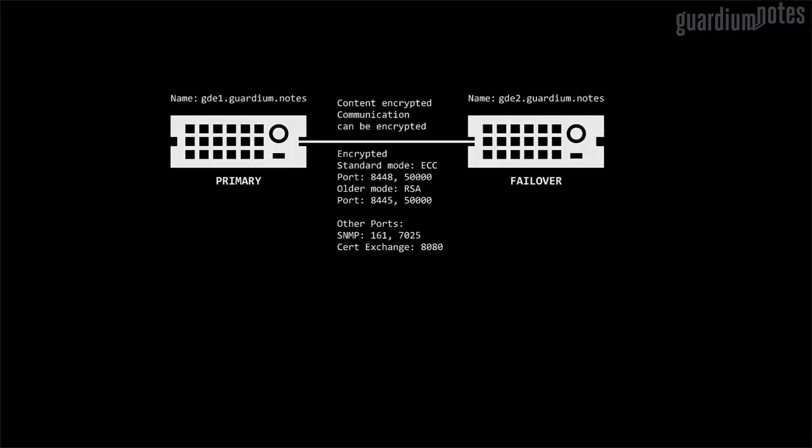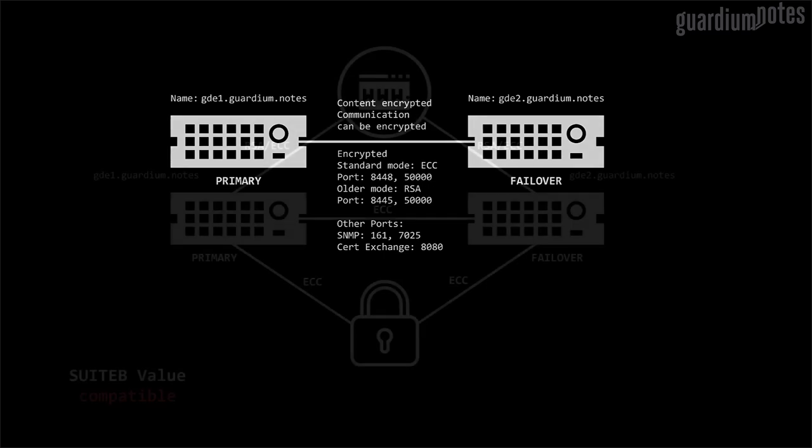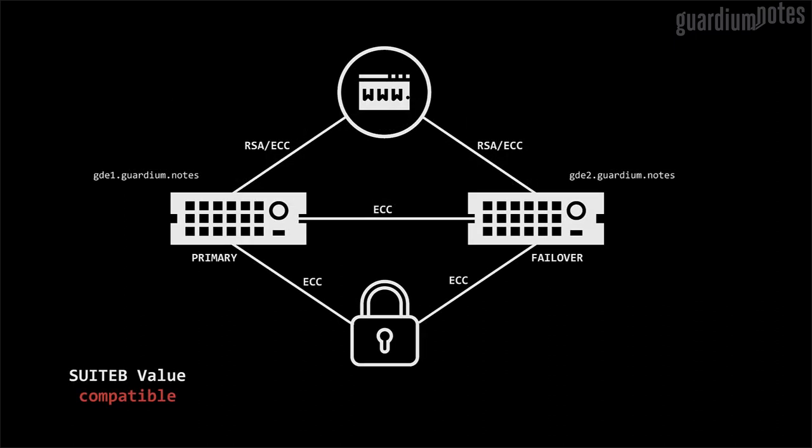Before we set up the connection between primary and failover DSM, we must open network ports to allow this communication. Here is the list of ports used in DSM-to-DSM communication. Information exchange between appliances in the HA configuration takes place through encrypted content, but it is also possible to use an encrypted information channel — the TLSHA command is used for this. In addition, we can choose a cryptographic algorithm used in the communication channel: RSA or ECC. This choice applies to the entire information exchange, also between the user and DSM as well as DSM and agents. The suitB command is used to determine the cryptography algorithm.